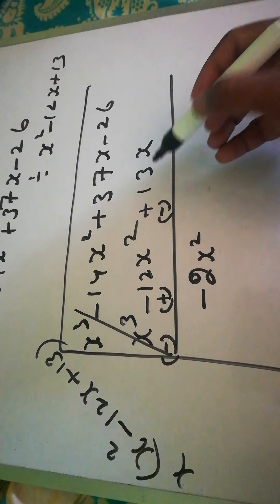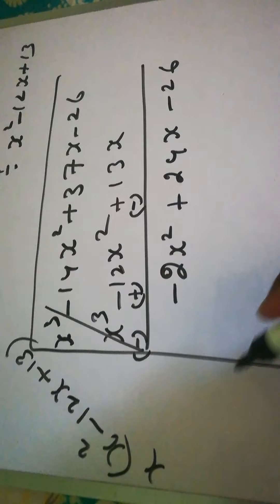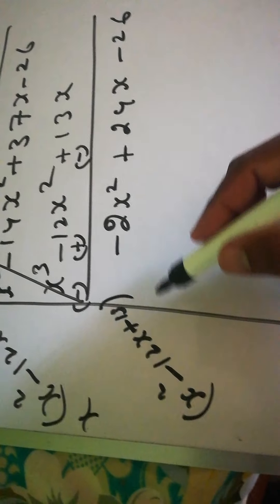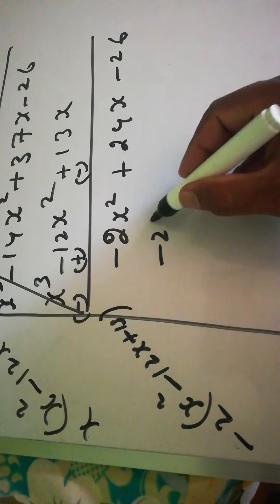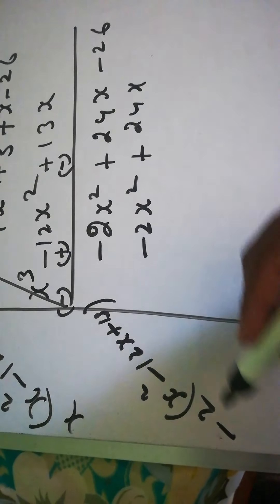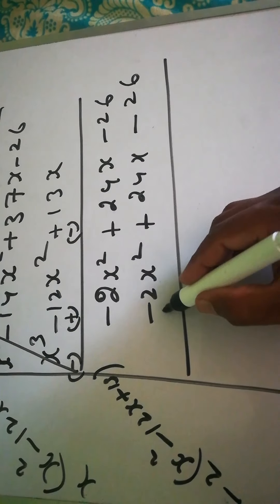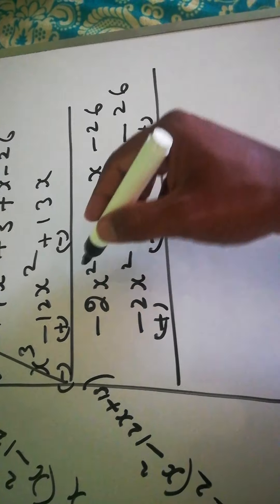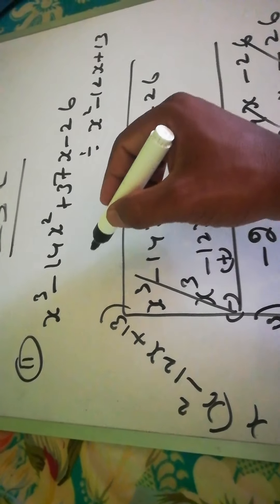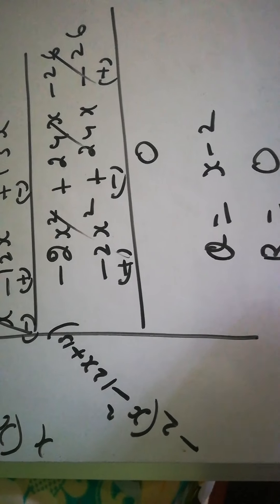After cancellation: -14 plus 12 is -2x², and 37 minus 13 is 24x, minus 26. Bring down x² - 12x + 13. Multiply by -2: -2 times x² is -2x², minus times minus 12 is +24x, and plus times minus 13 is -26. Change the sign and everything cancels, remainder is 0. Therefore the quotient is x - 2 and the remainder is 0.